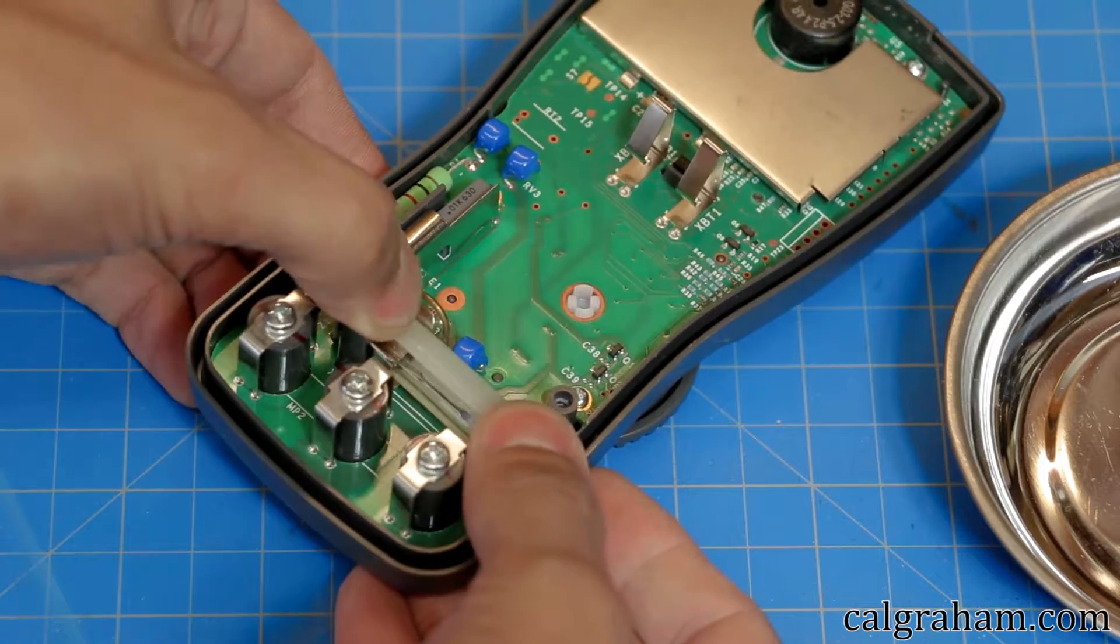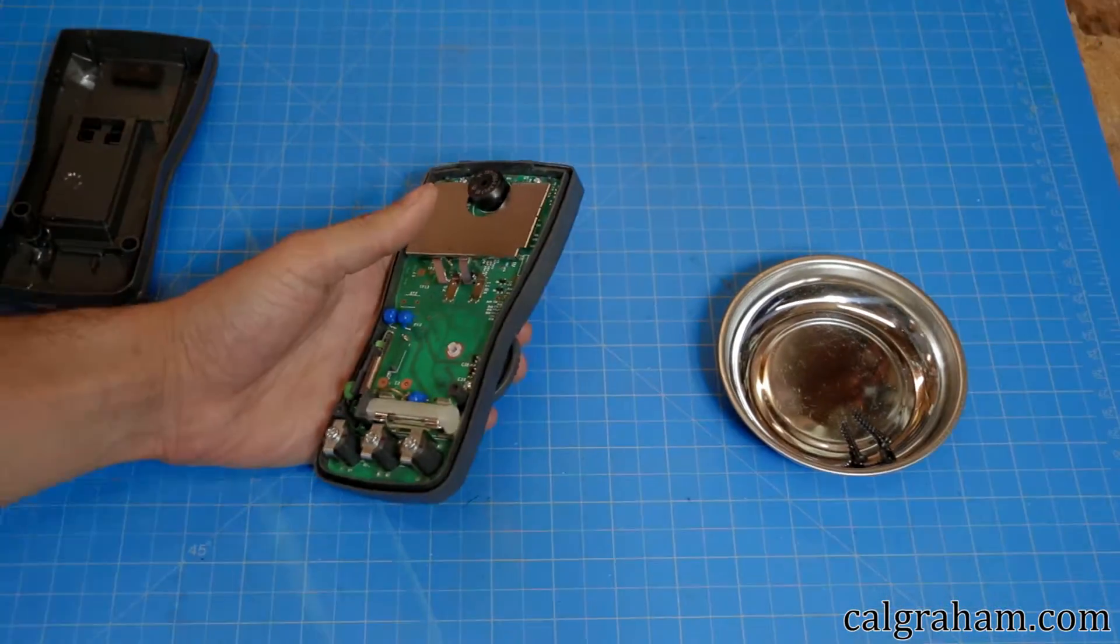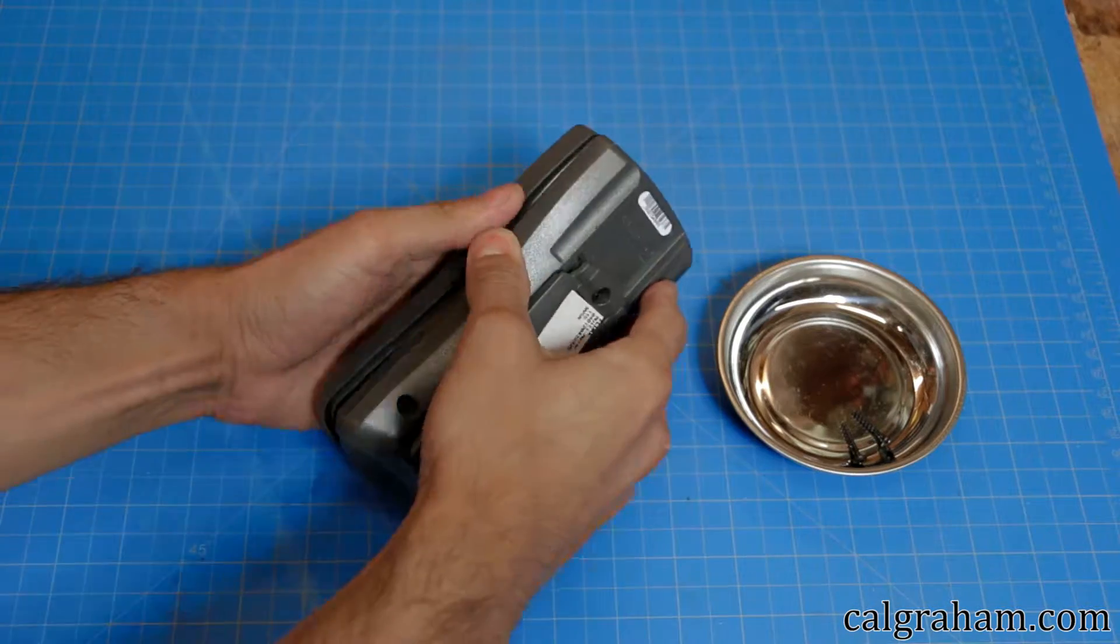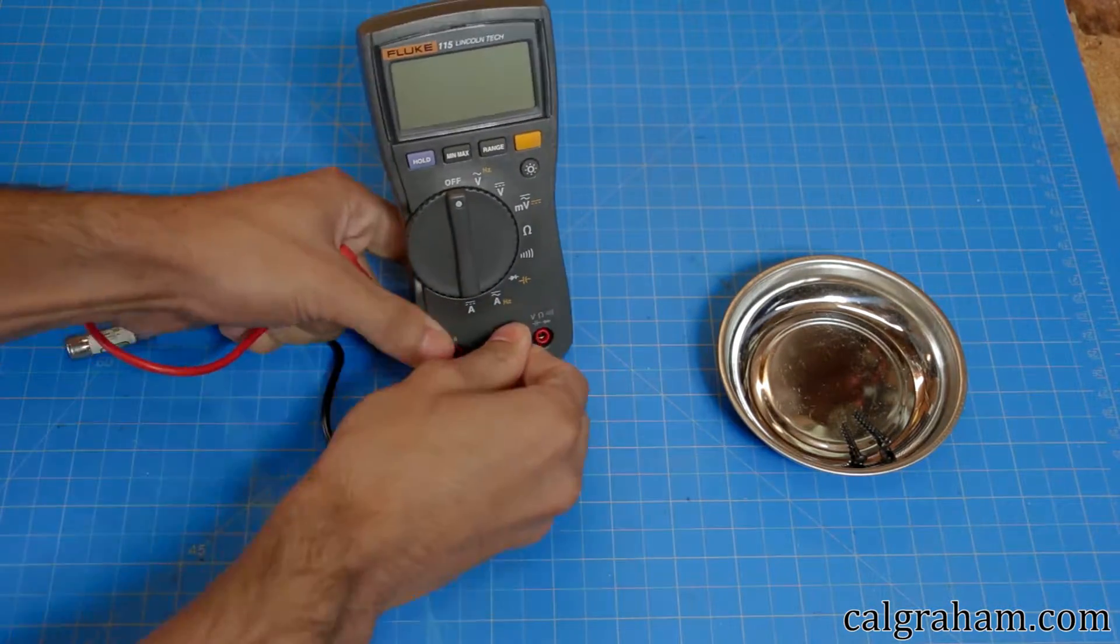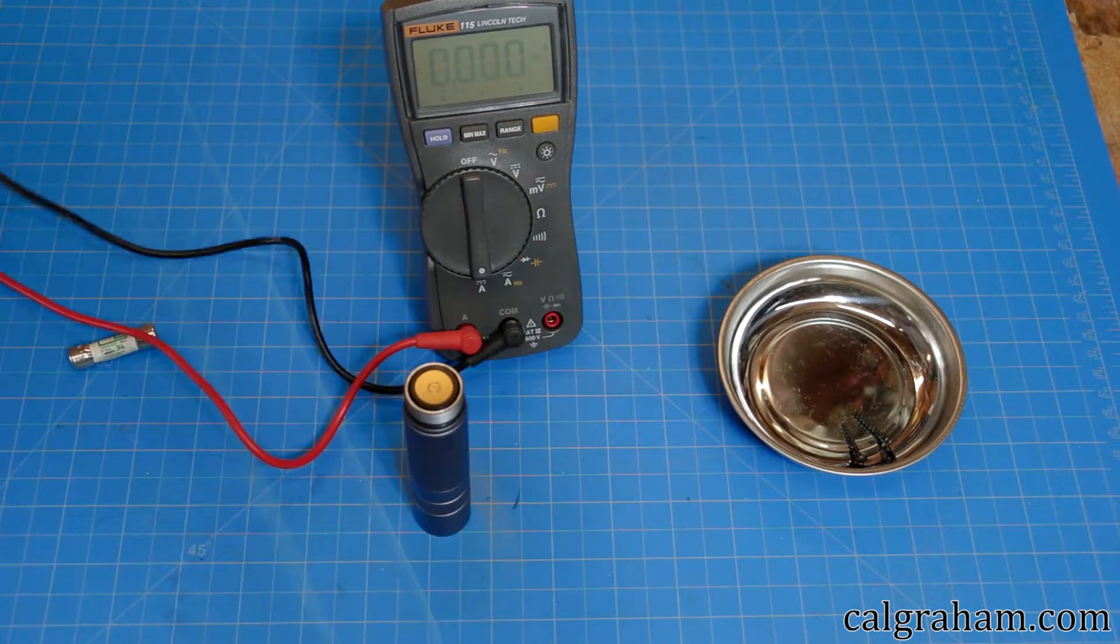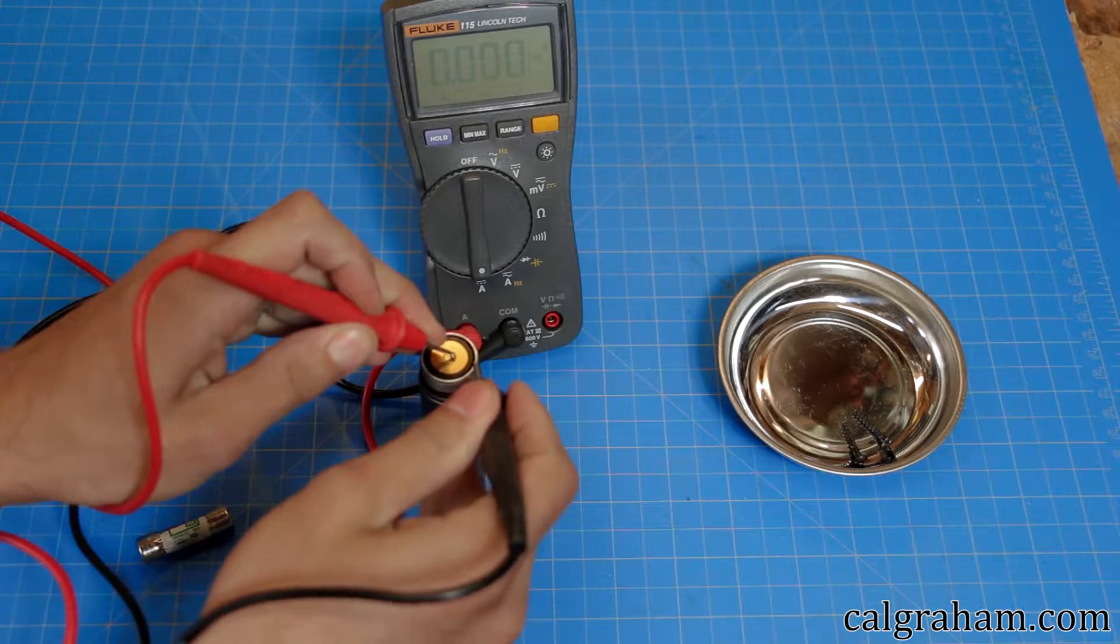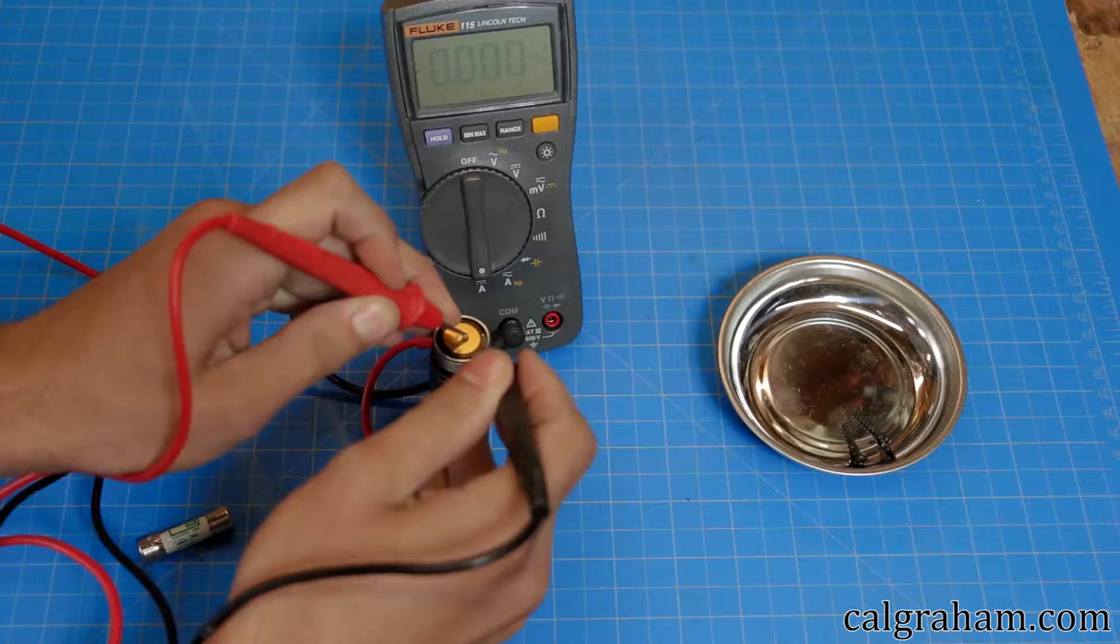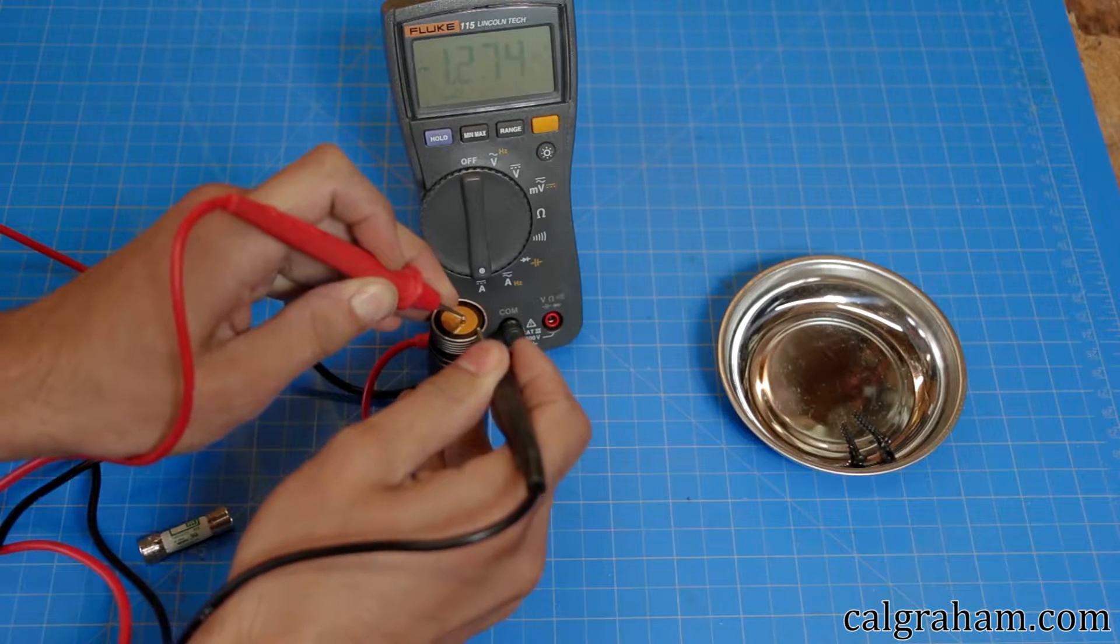Clip the new fuse assembly into place and it's ready to test. Always test stuff before you put it back together whenever possible. It works. Now it's time to reassemble the multimeter.